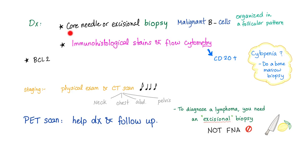To diagnose any lymphoma, you need a core needle biopsy or an excisional biopsy of the lymph node. You'll find malignant B-cells organized in a follicular pattern — that's why we call it follicular lymphoma. On immunohistological stain, you'll find CD20 positive because it's a B-cell lymphoma, and BCL2 overexpression — the anti-apoptotic protein.